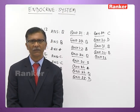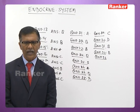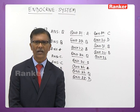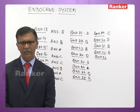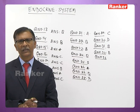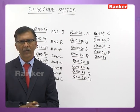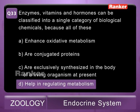Thirty-third question: enzymes, vitamins, and hormones can be classified into a single category of biological chemicals because all of these A - enhance oxidative metabolism, B - are conjugated proteins, C - are exclusively synthesized in the body, D - help in regulating metabolism. All three — vitamins, enzymes, and hormones — help in regulating metabolic activity; they are not body-building materials. The correct answer is D — help in regulating metabolism.